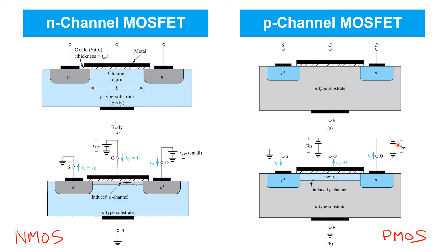So in summary, for enhancement mode devices, the polarity of the gate source voltage and the polarity of the drain source voltage is reversed in p-channel transistors. This can create a lot of negative signs in your calculations and expressions for p-channel transistors. So very often we'll just use absolute values to create expressions that work for both n-channel and p-channel transistors. But it'll be important to keep in mind what the typical polarities are for p-channel and n-channel transistors so that you're doing the calculations properly.